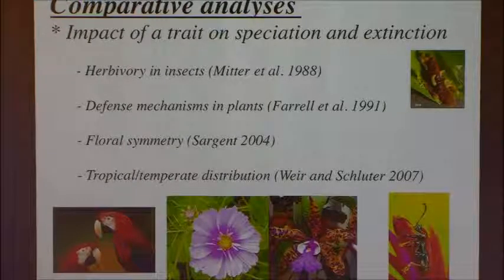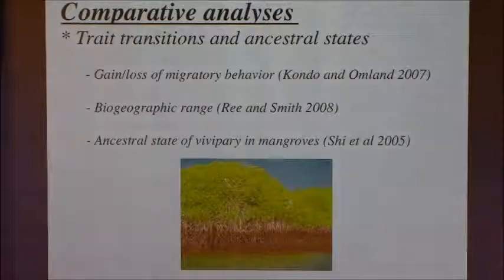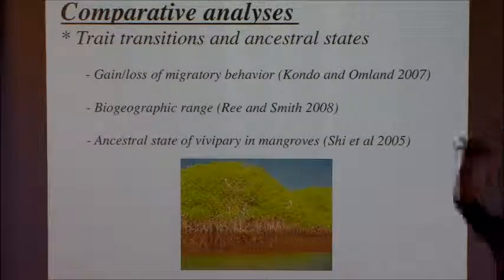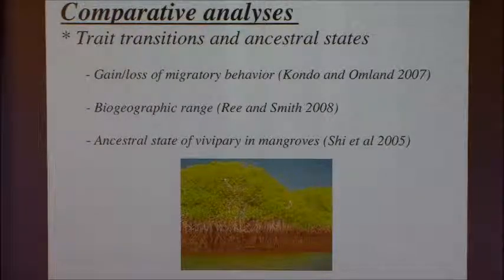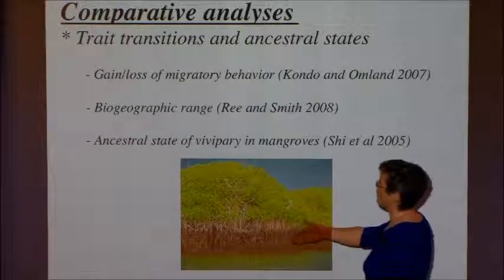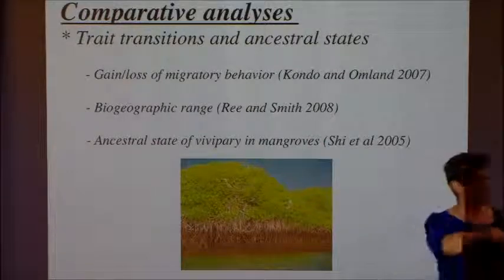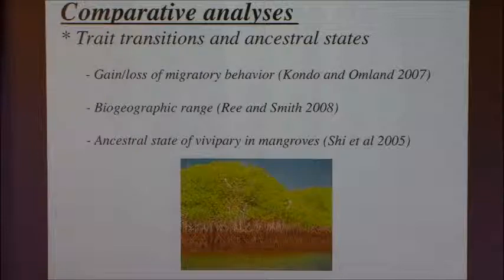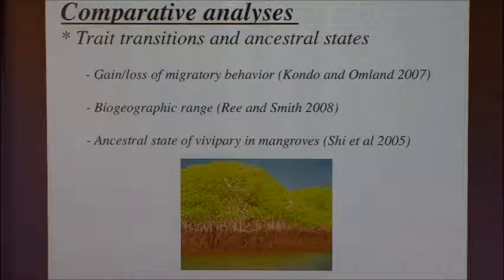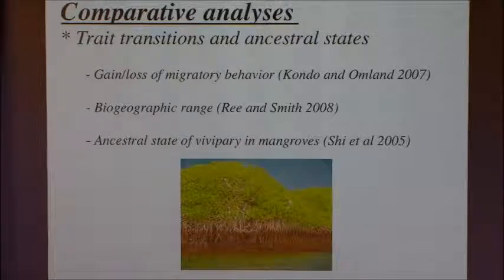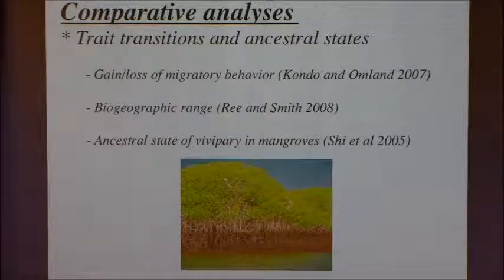There's a whole series of papers taking this approach. Another type of comparative analysis asks a different question: it looks at the tree of life and asks where have transitions occurred, and in what direction do they tend to occur? For example, with vivipary — mangroves are interesting because they are viviparous, the seed grows immediately into the plant, and they're very salt tolerant. If we reconstruct the evolution of this trait, has it evolved multiple times or only once as a shared characteristic of a single evolutionary transition?